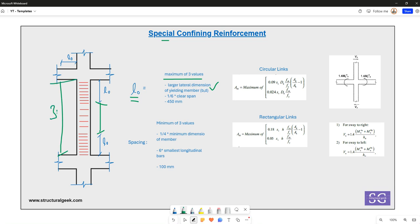And also 450. So out of these three values, whatever is the maximum, that L0 would be there. And for that length L0, you need to provide the special confining reinforcement.